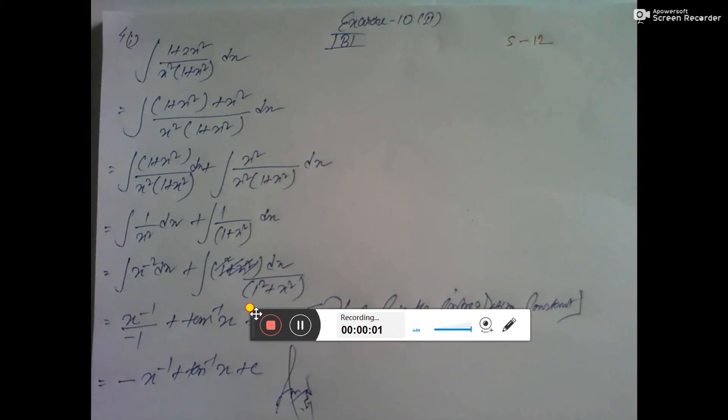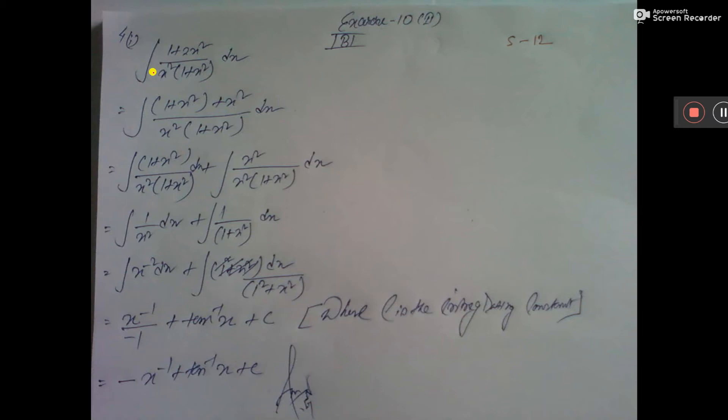See the sum for part 1, it is integration 1 plus 2x squared by x squared into 1 plus x squared dx.